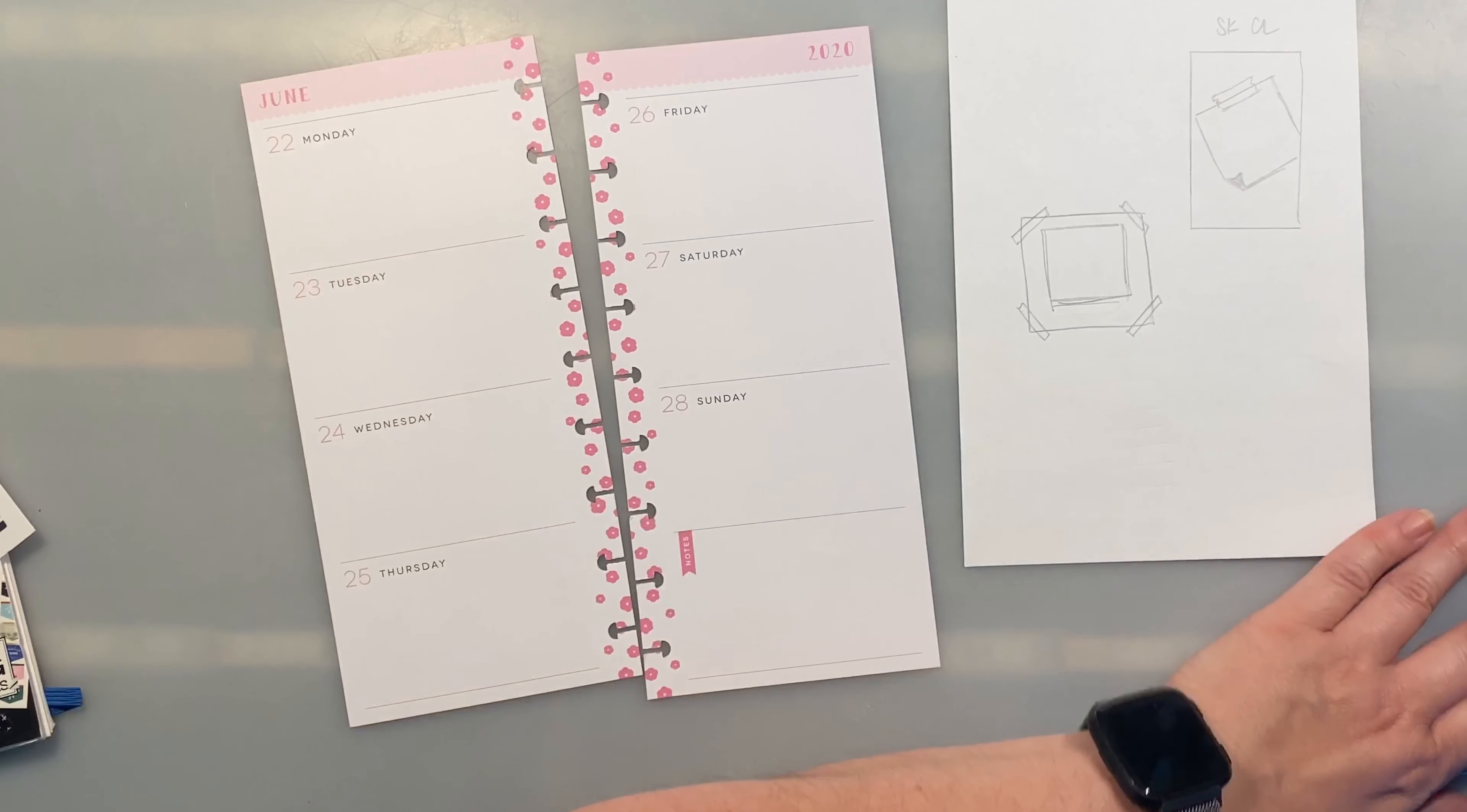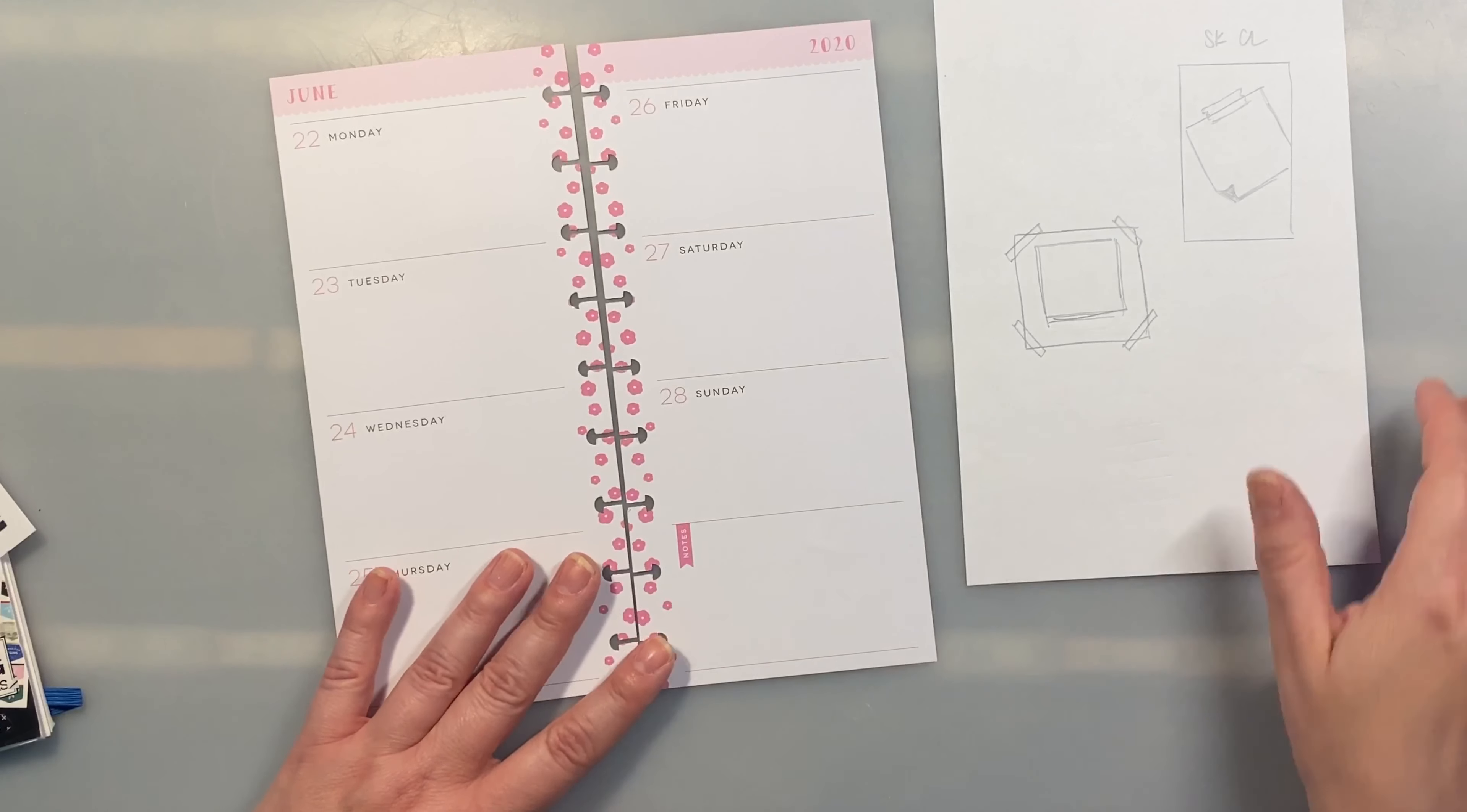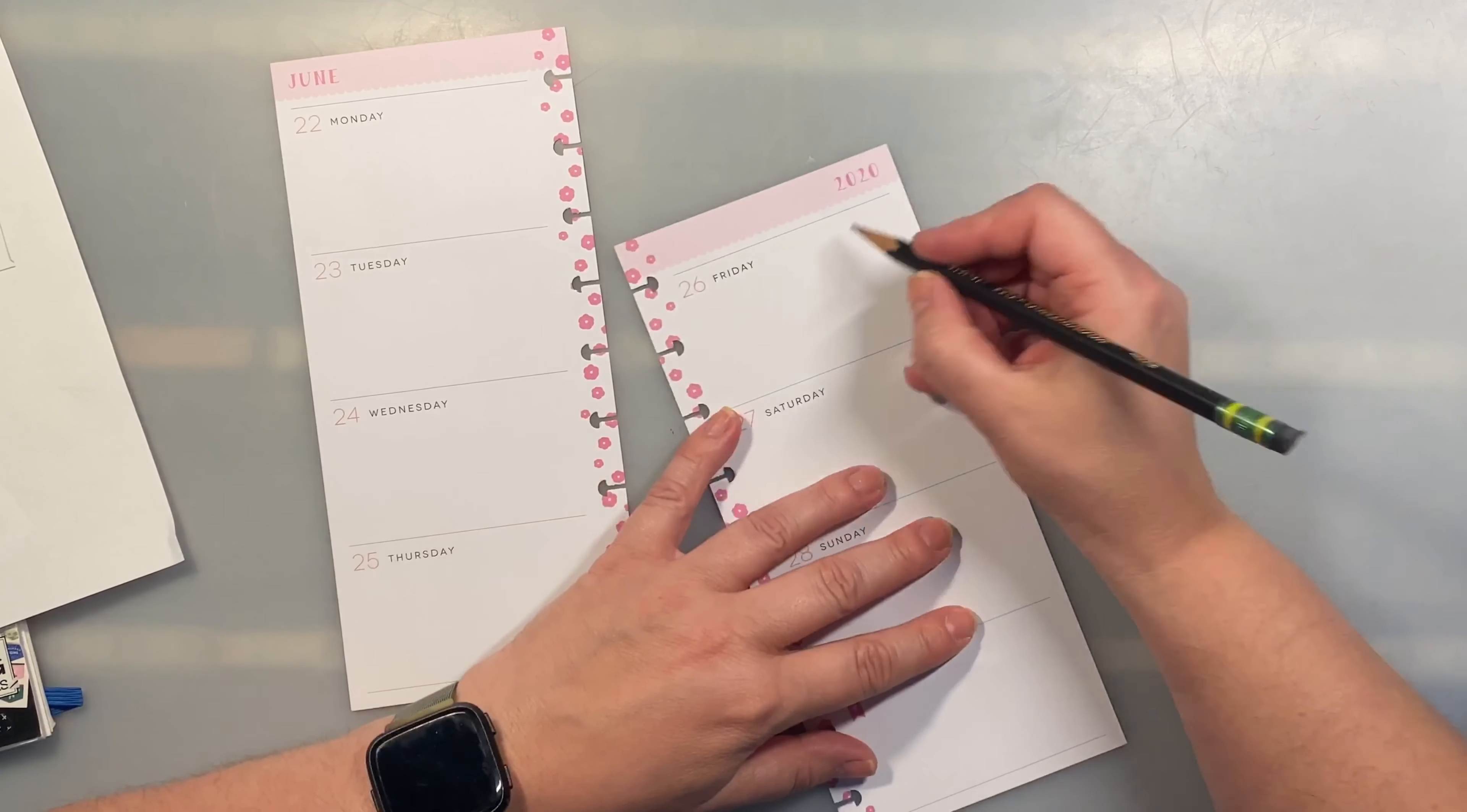My favorite place to look on Pinterest is the bullet journal layout ideas, because I came from bullet journaling first when I got into the planner community, and I used to draw my weekly layouts. So I go there to bring back some of that nostalgia and just inspire me of different ways that I can decorate my planner versus just putting a sticker down.